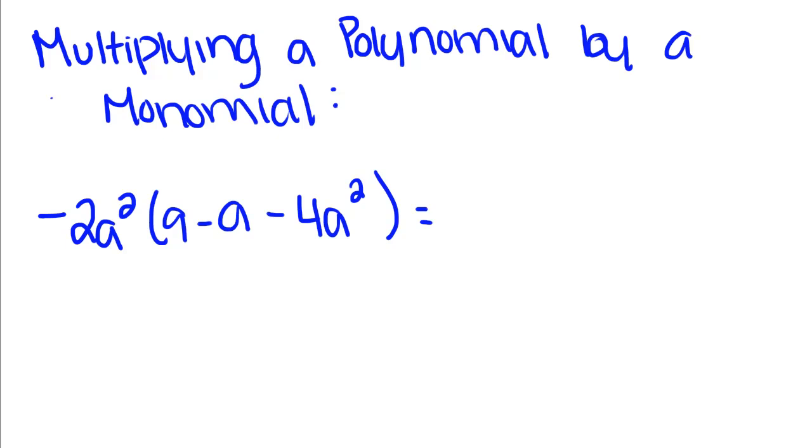When we learn our order of operations, we learn that you have to do what's inside parentheses first. The distributive property tells me that is the same thing as taking this first term and multiplying it by every single term inside the parentheses. We've used this before when subtracting polynomials in order to distribute that negative to each term.